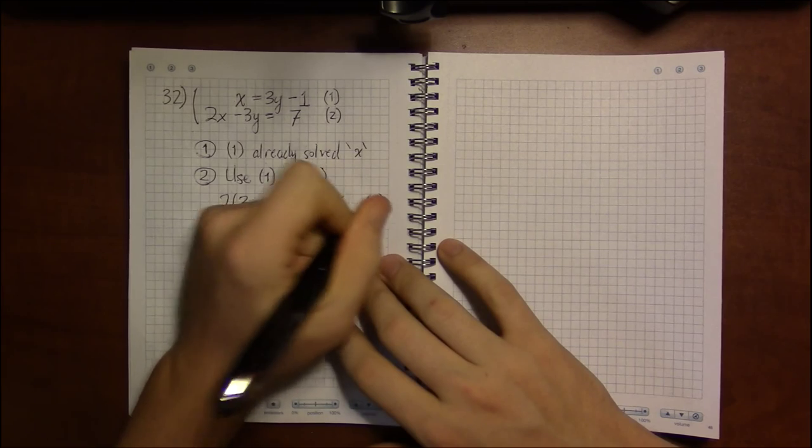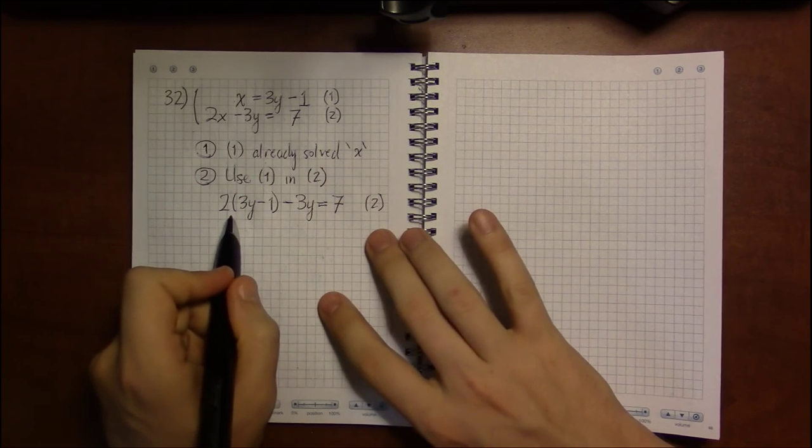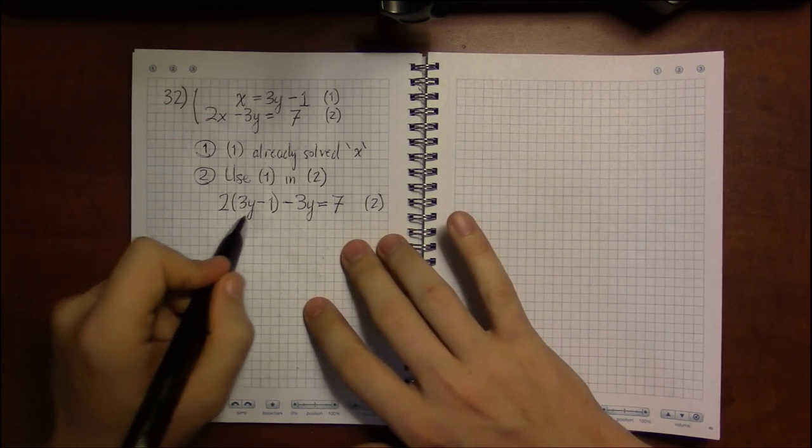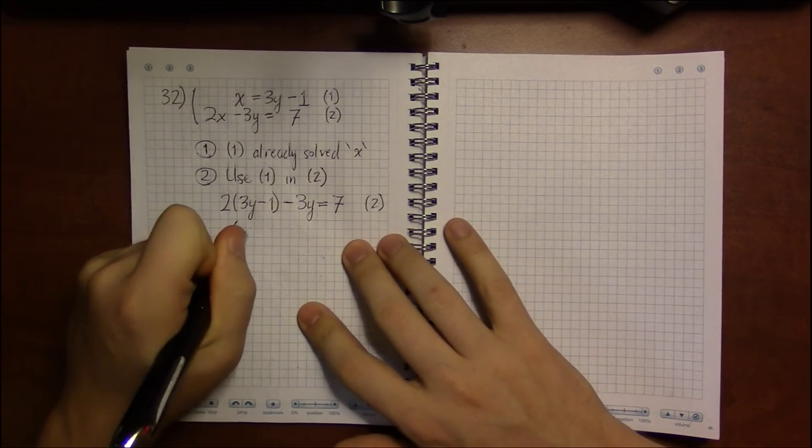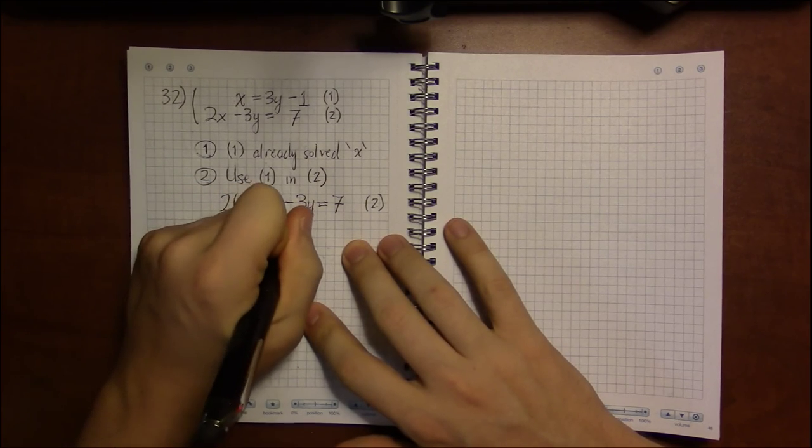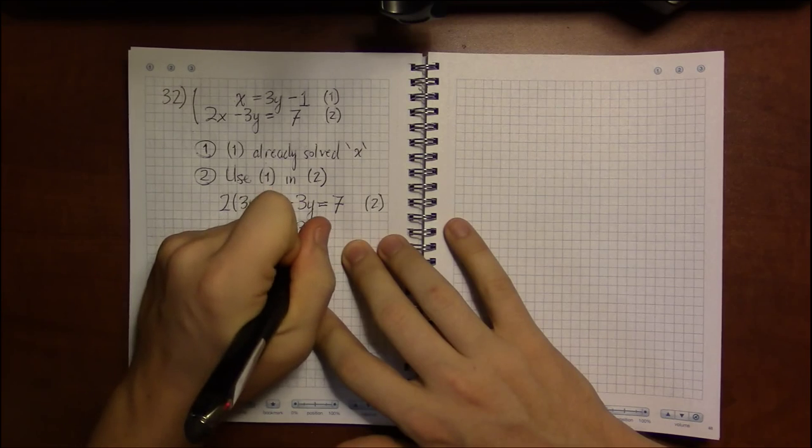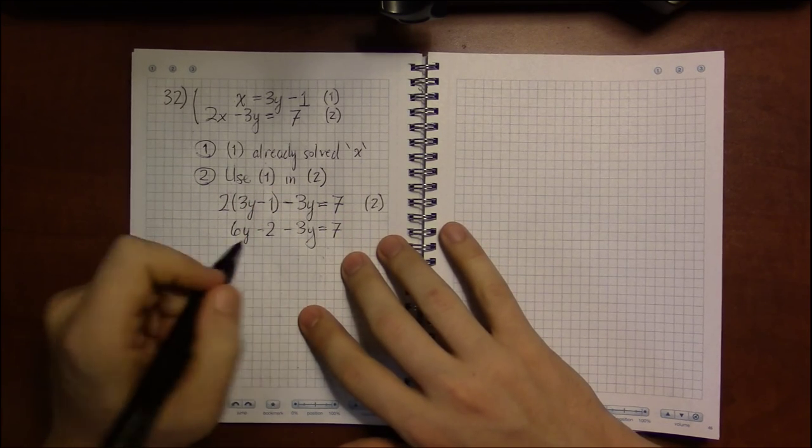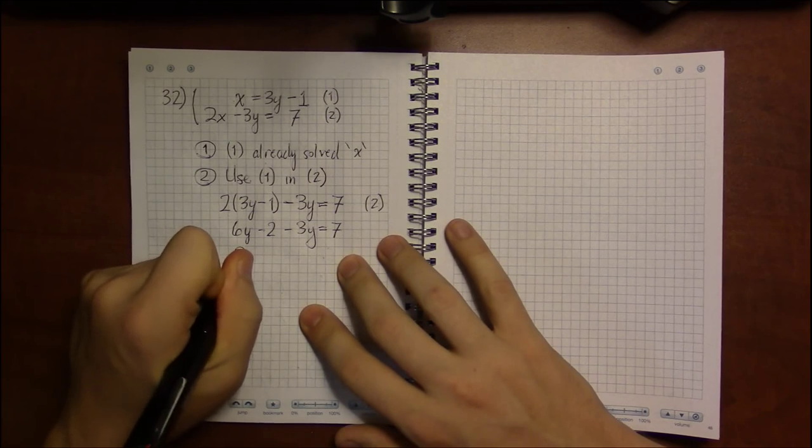And this is just a new way of writing equation 2, seeing that x is 3y minus 1. So we can simplify this to get 6y minus 2 minus 3y equals 7. Well, 6y minus 3y is 3y.